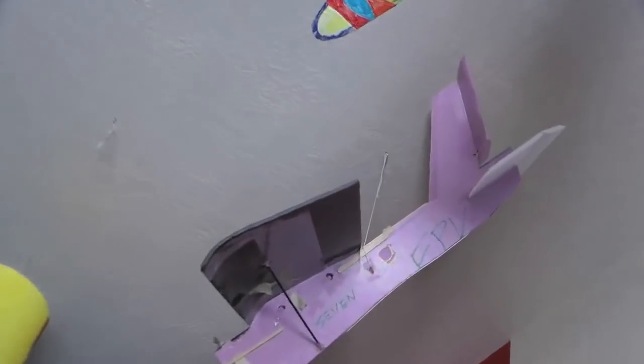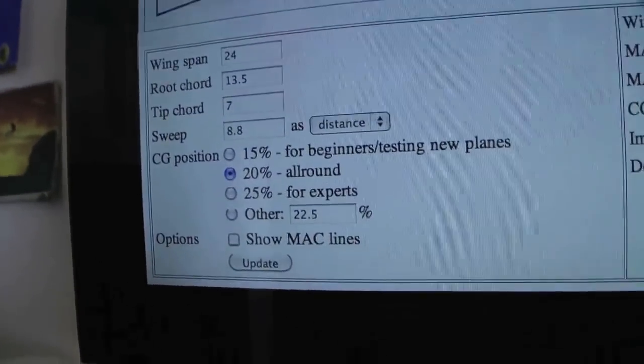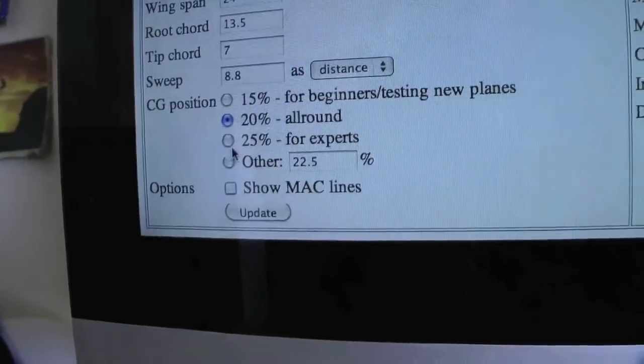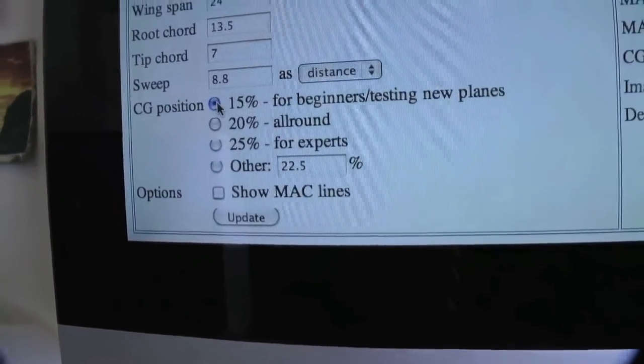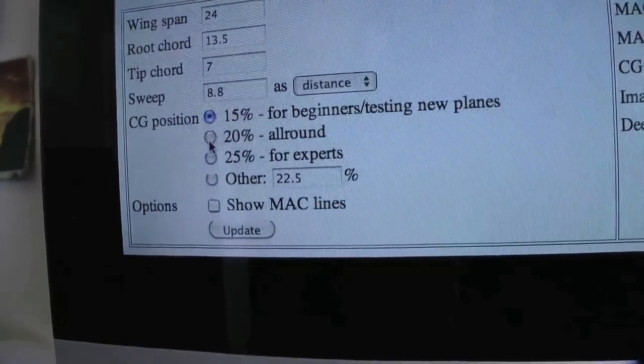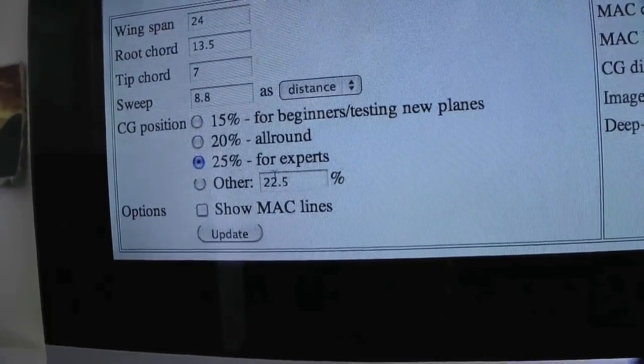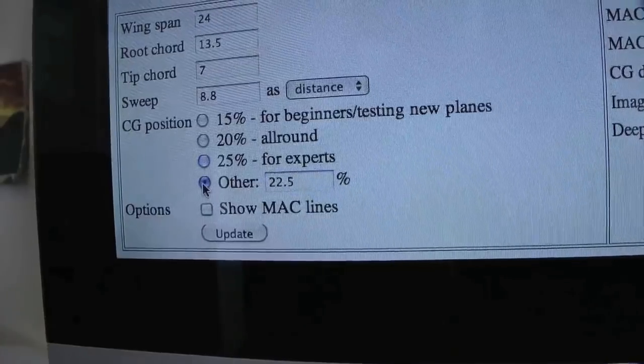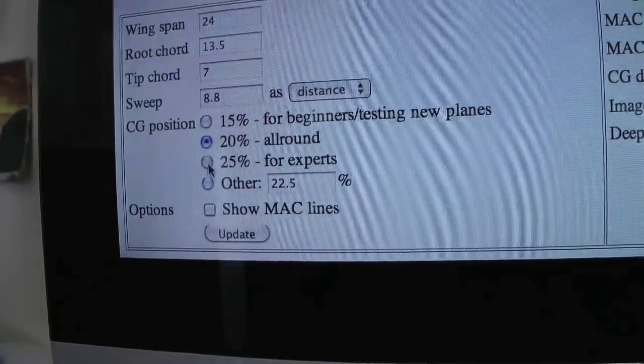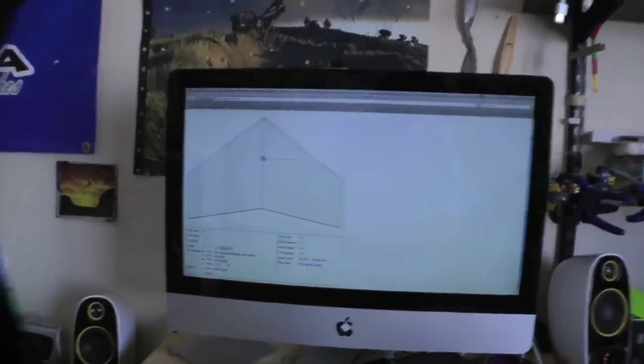And that is with a 20% of the wing. Remember on this one, it was 33%. Yeah, well on this one, it's 20%. So you know, it gives you some options here. You can do 15% if you're a beginner. That is pretty good. 20% for all around and then 25% for experts. And you can do other, but I don't recommend that. So basically you can choose one of those.